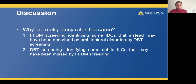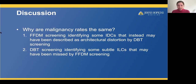We wondered why the malignancy rates were the same for both groups and proposed two hypotheses. First, it's possible that FFDM screening identified some IDCs that would have been described as architectural distortion on DBT instead of as an asymmetry — consistent with what we observed in the FFDM group where many asymmetries turning out to be cancers were ultimately described as distortions. Second, the DBT group had a higher percentage of ILCs, and some of these subtle ILCs may have been missed on FFDM screening.